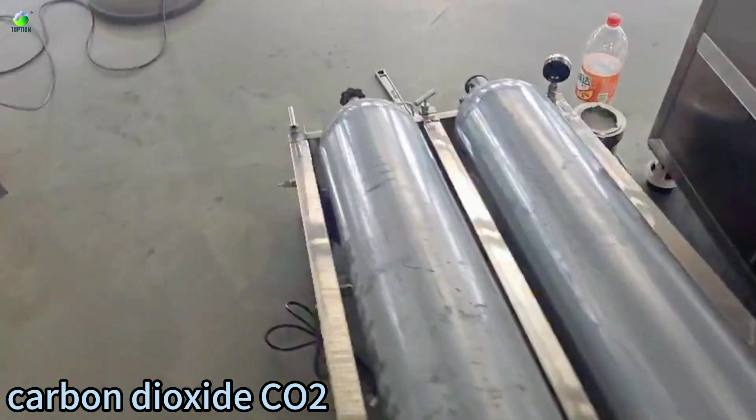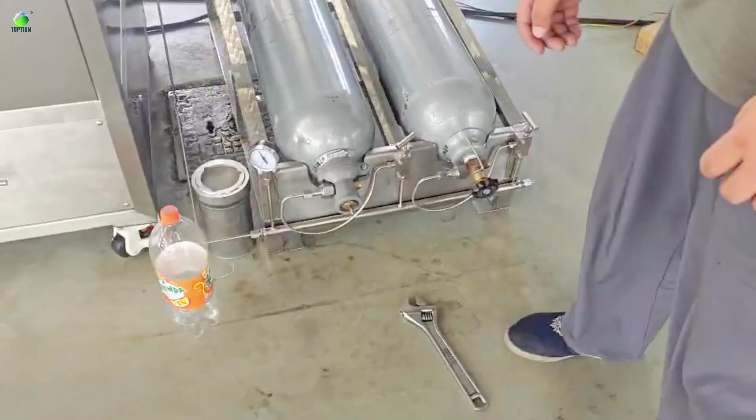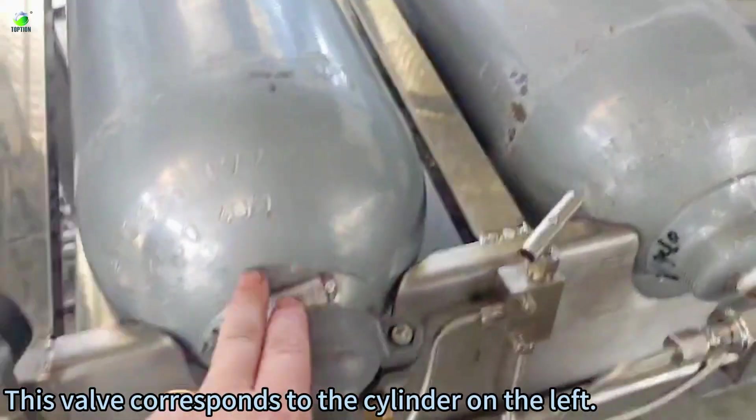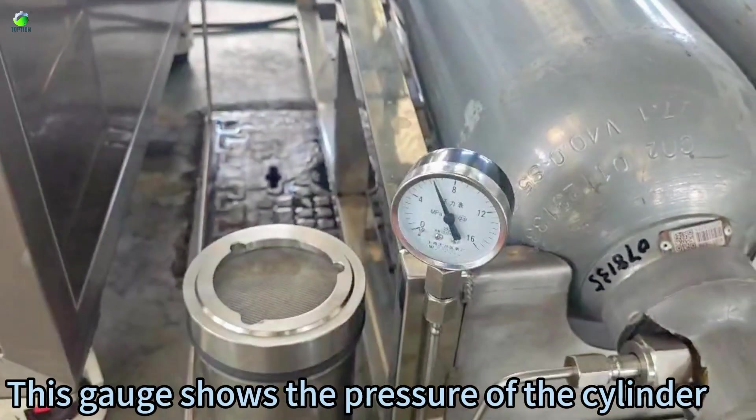Carbon dioxide core. This valve corresponds to the cylinder on the left. This gauge shows the pressure of the cylinder.